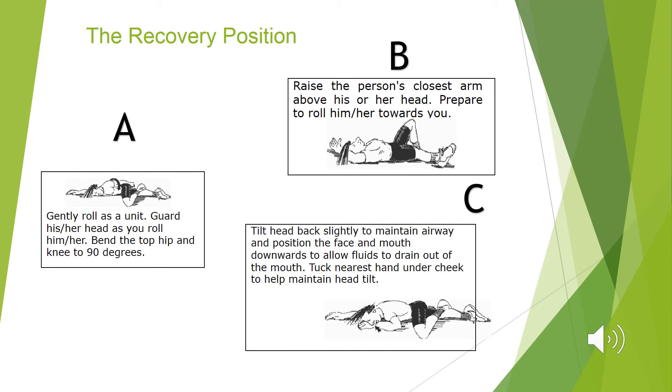The second step is to gently roll them as a unit, guarding their head as you roll them. Place the top hip and knees to 90 degrees.